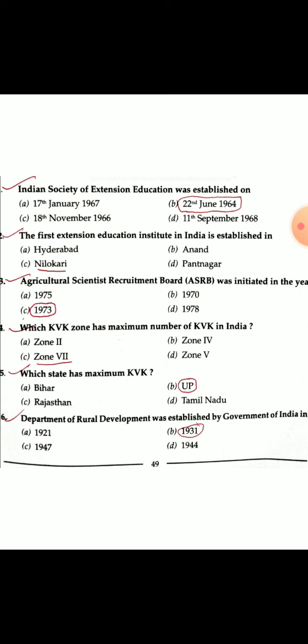Indian Society of Extension Education was established in June 1964. Second question: The first Extension Education Institute in India was established in Nilou Kheri in 1959. There are a total of four Extension Education Institutes in India; the second one was in Hyderabad.